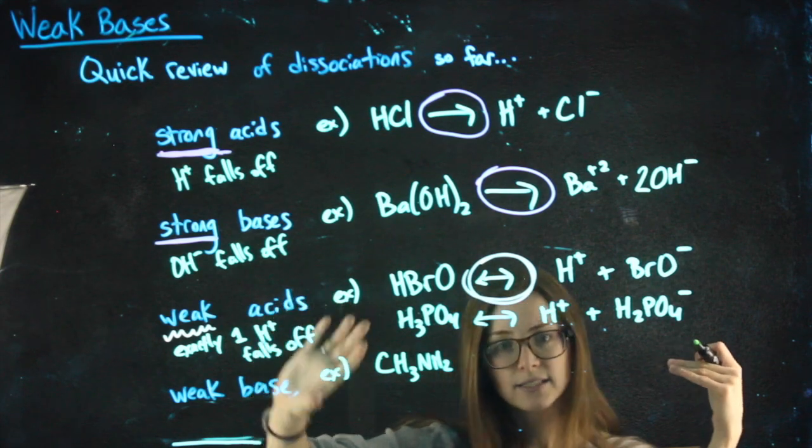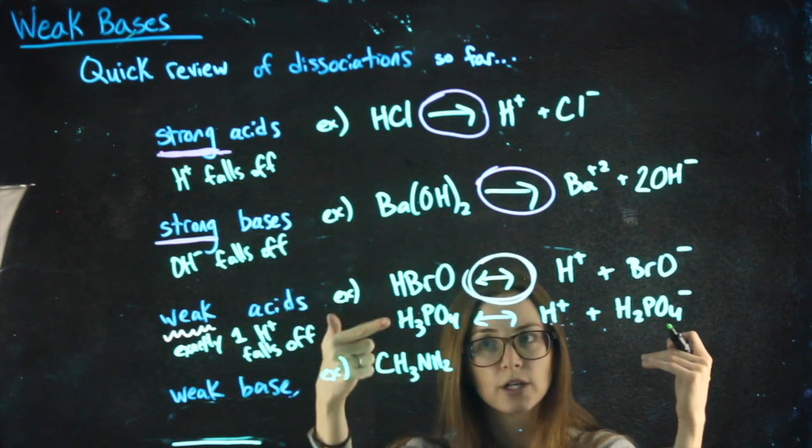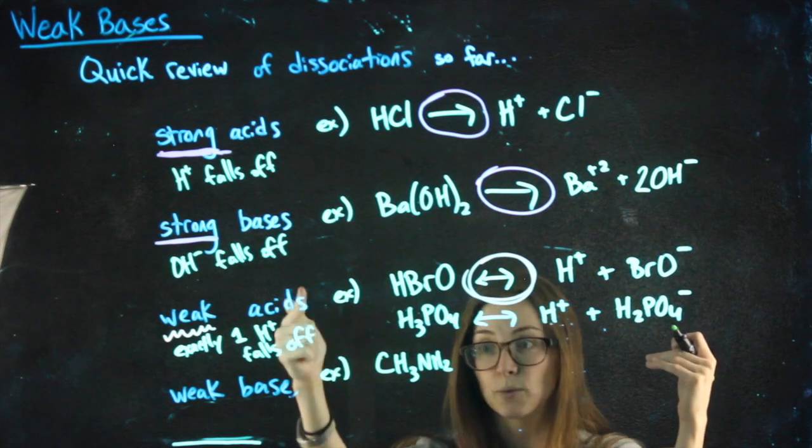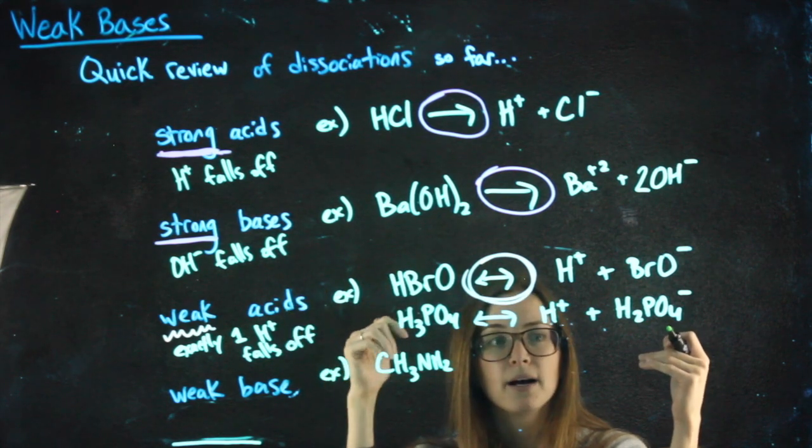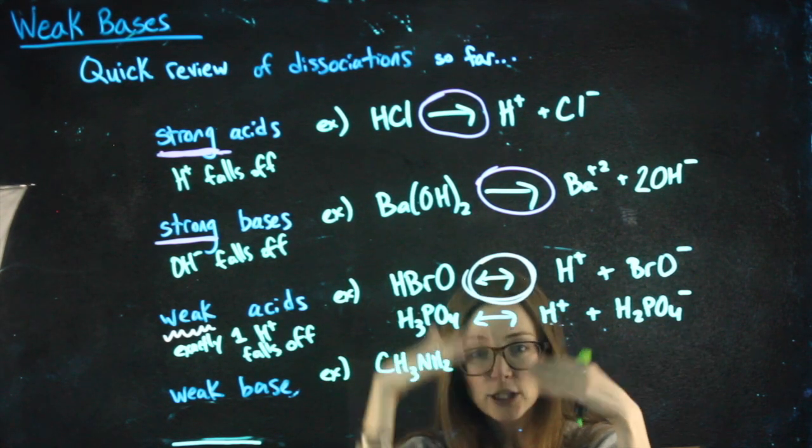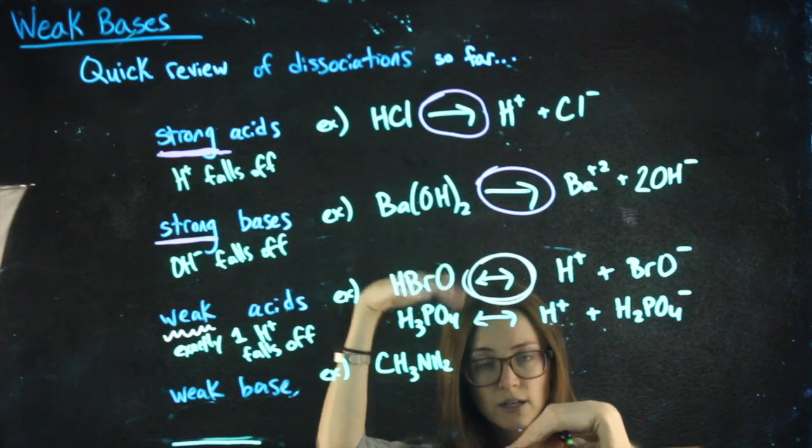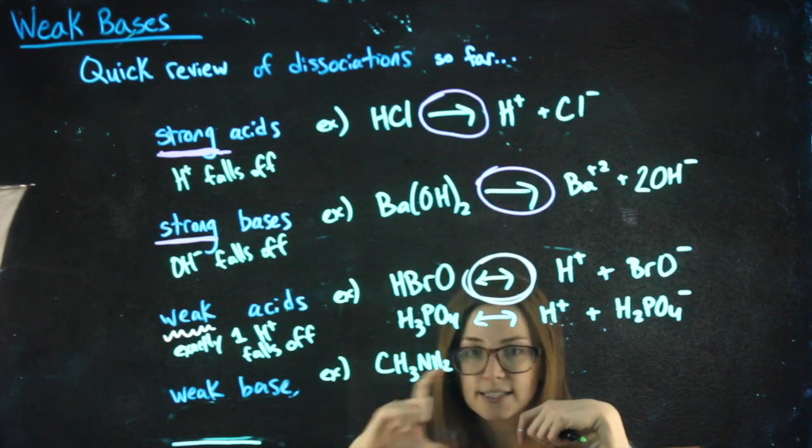Weak acids and bases, general rule of thumb, if it starts with an H, it's a very high likelihood it's a weak acid. If it doesn't, really that chart that you have, the KA chart, there's a section of weak acids and a section of weak bases.